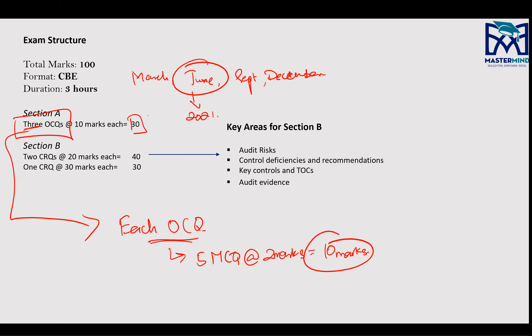Section B is the bigger chunk and probably the more difficult one. It consists of two CRQs — Constructive Response Questions — which are long-form questions where you type and calculate. Each CRQ is worth 20 marks, making 40 marks. Then there's one CRQ worth 30 marks — the longest question — bringing Section B to 70 marks and the total to 100.